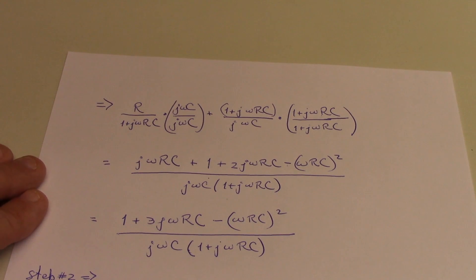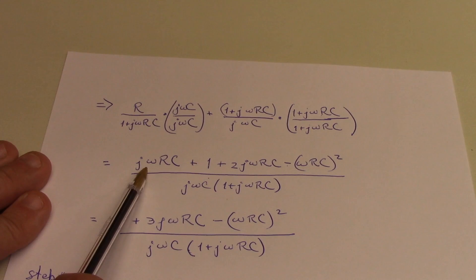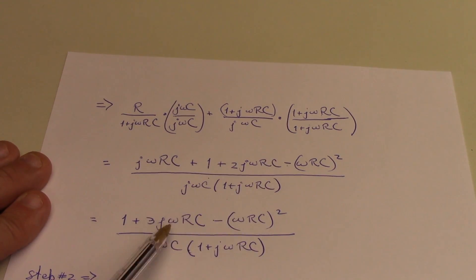This doesn't look simpler, but I promise you it's going to get there. So now let's simplify the numerator. I've got j omega rc plus 2 j omega rc, so I've got a 3 j omega rc here.